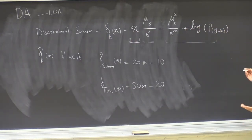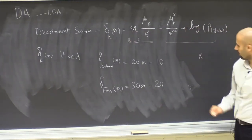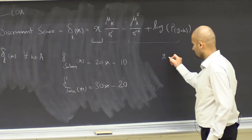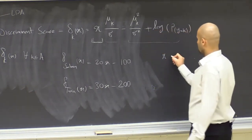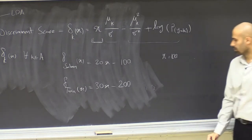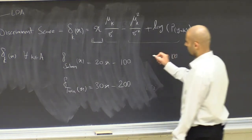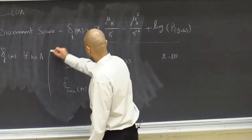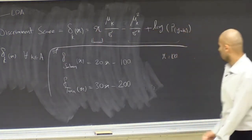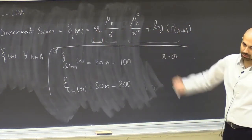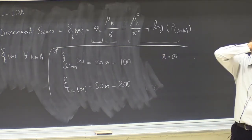Now we have a fish we just caught and measured. The length is 100. We want to know whether it's a salmon or a tuna. We calculate δ for salmon and tuna and then classify according to the class with the higher score.